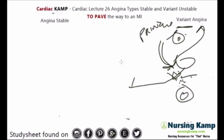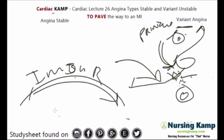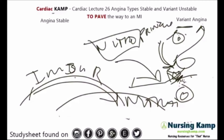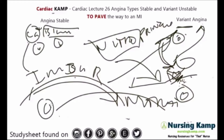With Prinzmetal angina, since the patient can't just wake up and take nitro effectively, they're put on something like isosorbide dinitrate — a long-acting nitrate taken chronically to prevent future episodes. They'll also have nitro on hand. These patients are often put on calcium channel blockers like Norvasc because calcium makes vessels harder, and calcium channel blockers make them softer and less prone to spasm.